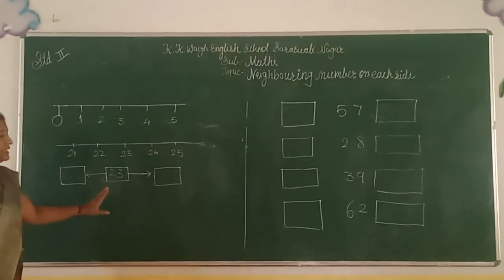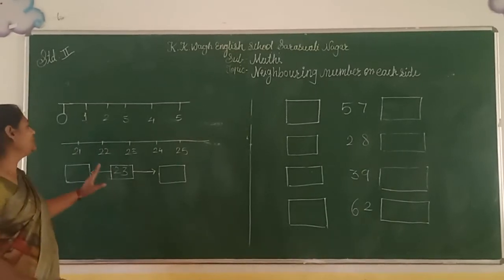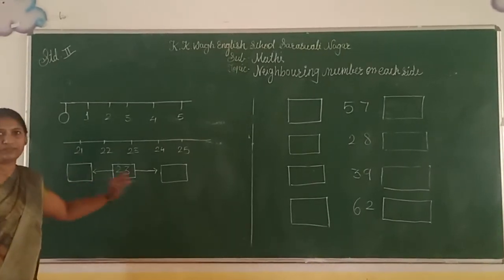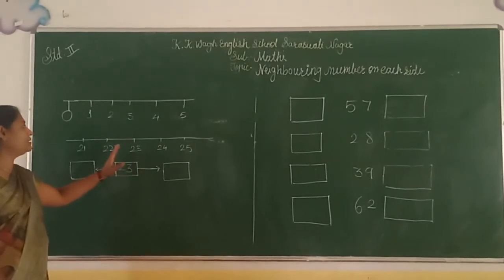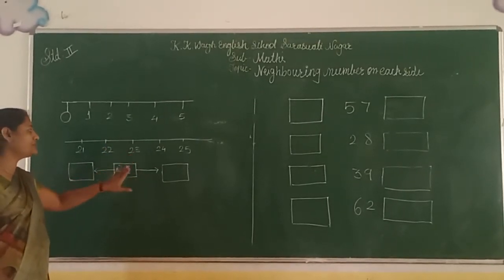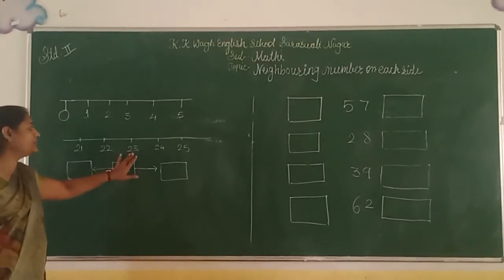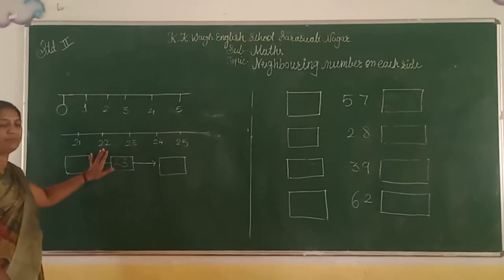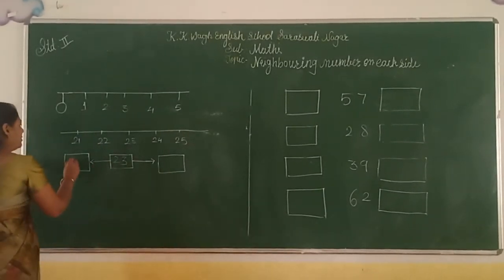Now I circle here the number 23. We want to find out the before number and the after number. Before number means the number that comes previous. Here the number 23, the previous number is 22. This is the before number.